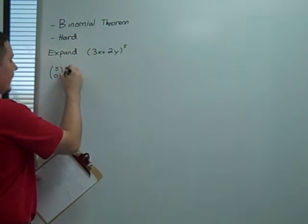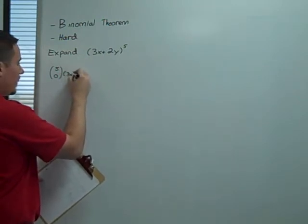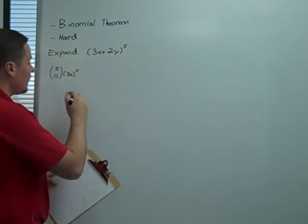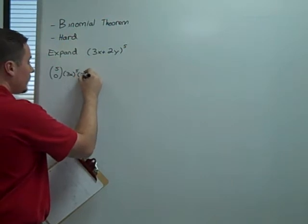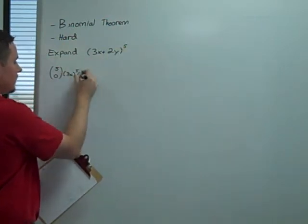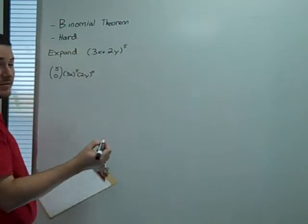Then I'm going to have 3x raised to the 5th power. Again, 5 minus 0 gives us 5. Then I'm going to have 2y raised to the 0 power. That is another one of those terms that's going to vanish.